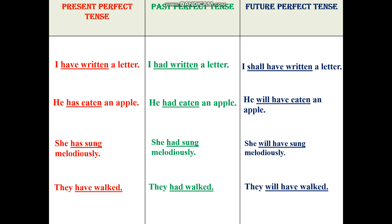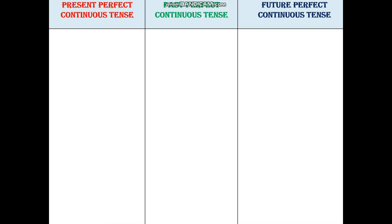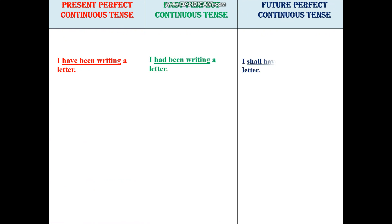For any doubts, please refer to my second, third and fourth videos on tenses. Next is present perfect continuous tense, past perfect continuous tense and future perfect continuous tense. First example: I have been writing a letter. I had been writing a letter. I shall have been writing a letter.